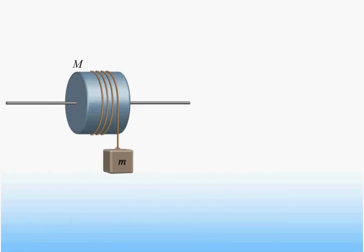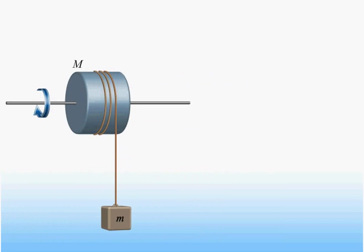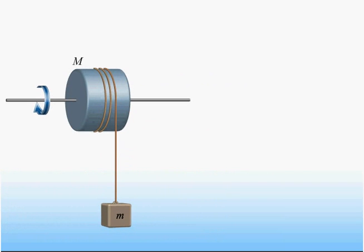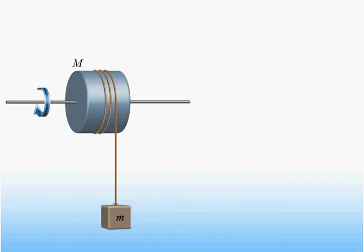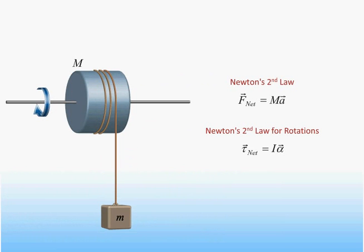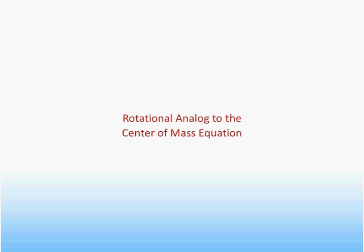We start this lecture with an overview, a plan for what will be presented. In this pre-lecture we will address examples that combine both translational and rotational motion. We will find that we need both Newton's second law and the rotational dynamics equation we developed last time to completely determine the motions. We will also develop the equation that is the rotational analog of the center of mass equation.